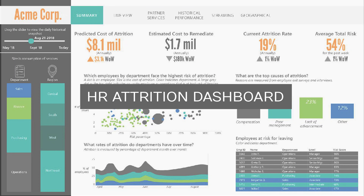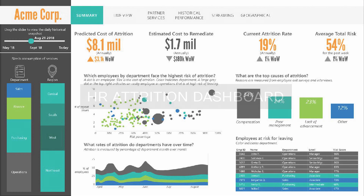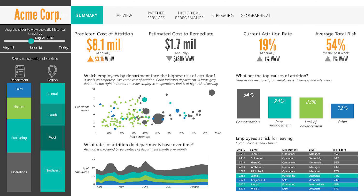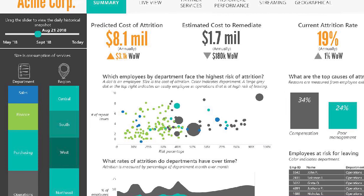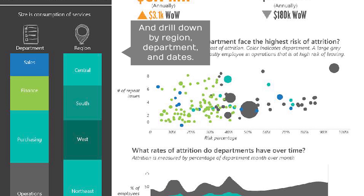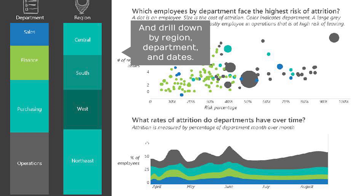Our team of visual analytics experts will create interactive dashboards that allow users to view key KPIs such as attrition rate and average total risk. Stakeholders can view the holistic health of the organization and drill down by region and department.